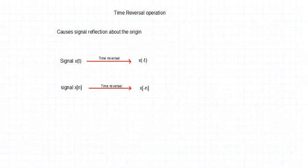Now we move to the next operation: time reversal. Time reversal is the next transformation type. It is simply a reflection of the signal about the origin. Signal X(T) when time reversed gives the signal X(-T). Xn when time reversed gives the signal X(-N).